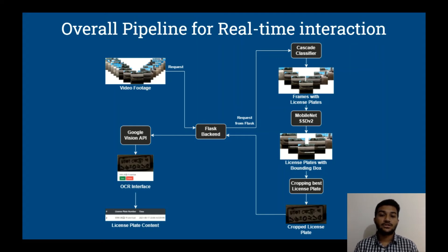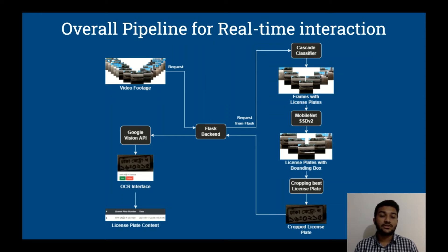The video footage is sent as a request to the Flask backend, which sends the video to the Cascade classifier. If the Cascade classifier finds license plates in any frames, it passes them to MobileNet SSD V2, which crops out the bounding boxes and sends only the best three frames of each license plate to the next module. Since many subsequent frames contain the same license plate, we only take the three highest-confidence frames. Two separate vehicles are distinguished using temporal frame separation — whenever there is an interval of one second, we know one vehicle has passed and another has appeared. For each vehicle, we store only the three best license plate frames and send them to the Vision API for OCR prediction.